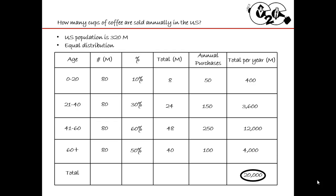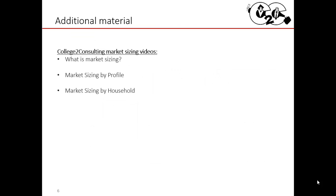At the end of the day, your paper should look like this: a very clean example of how you got to market sizing — by age grouping, percentage, total, the number of cups. Make sure you answer the actual question, and circle your final answer. For more videos, check out how we do market sizing by profile and by household, or revert back to what is market sizing. Thank you very much.